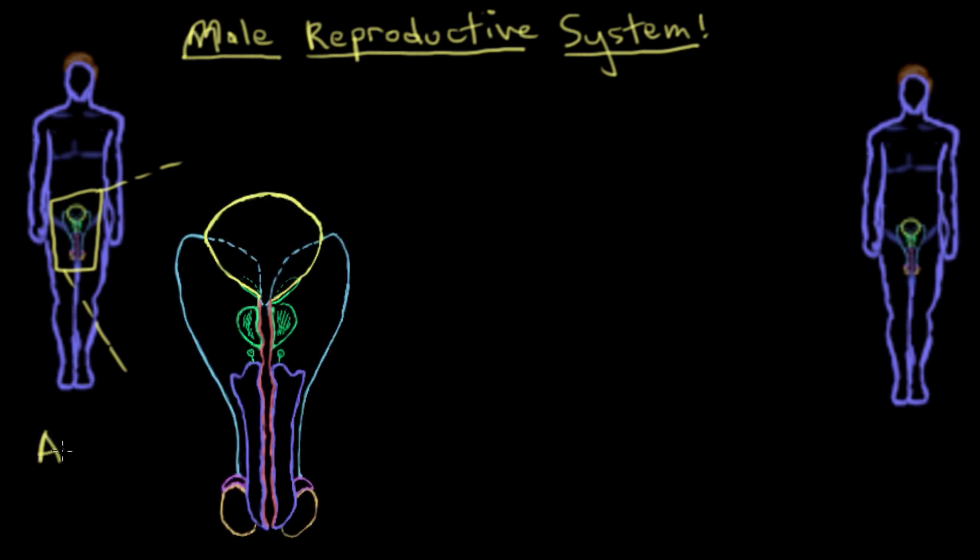And so that's called an anterior view, looking at it from the front. That's sort of the opposite to a posterior view, which is looking at it from behind. The other one is called a sagittal view.